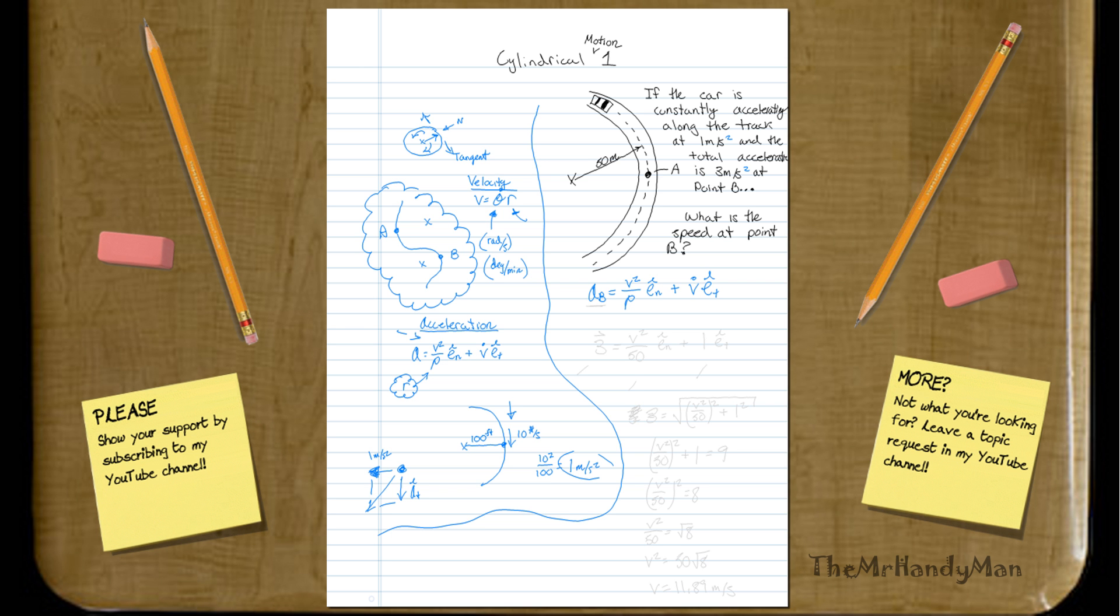We know that, first off, we don't know what velocity is. We know what the total acceleration is. We know that that's 3, so that will equal V squared over rho, which is 50, and remember, this is in the normal direction, plus V dot, which is going to be 1 meters per second squared, and that's in the tangential direction.